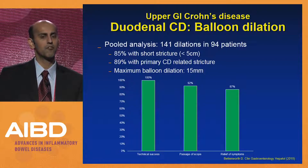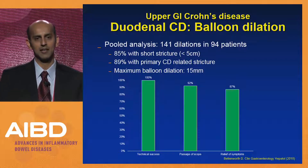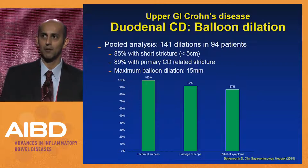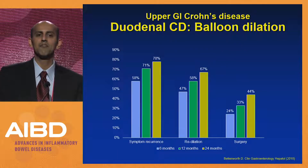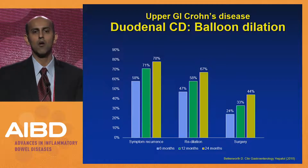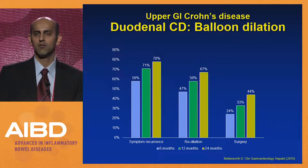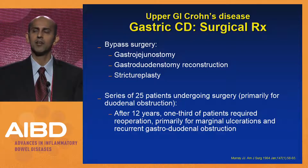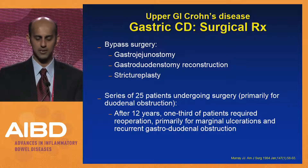A larger series from multiple centers looking at about 100 patients with gastric and duodenal Crohn's disease showed similar results: technical success in the vast majority, symptom relief in about 80 to 85%, but significant symptom recurrence. At 6, 12, and 24 months, the proportion needing redilation or surgical intervention climbs — nearly 78% had symptom recurrence two years after dilation. Surgical options for gastric outlet obstruction include gastrojejunostomy or strictureplasty, though there is risk of marginal ulcerations and recurrent obstruction. For esophageal strictures, surgical treatment is much more difficult.